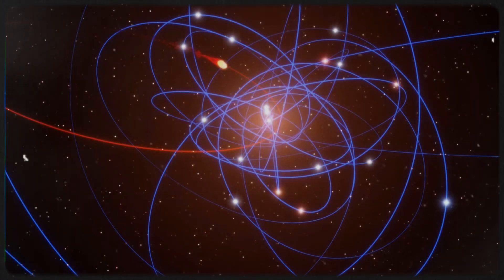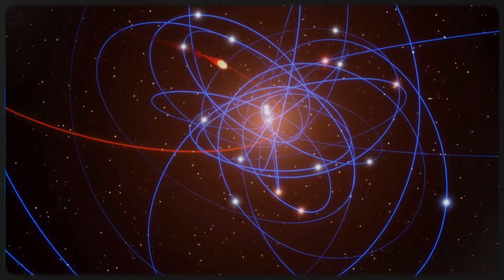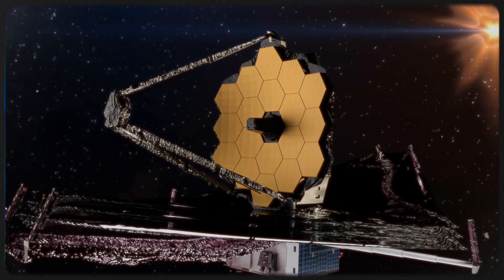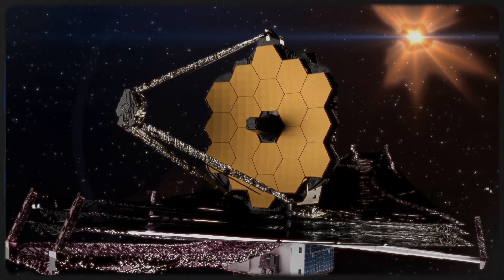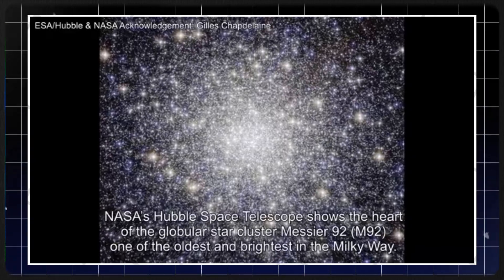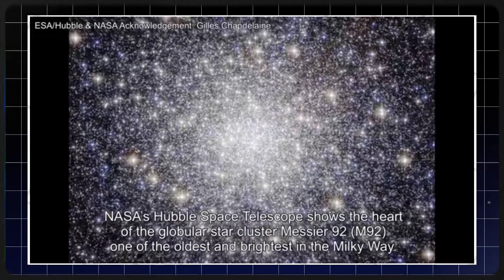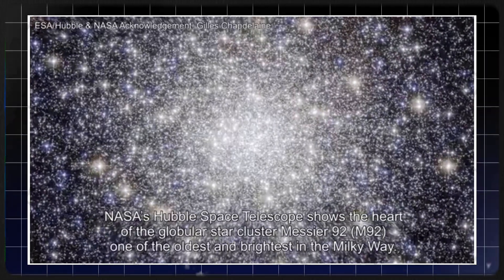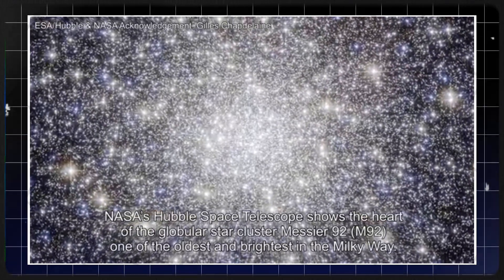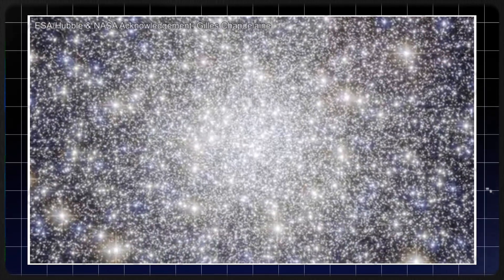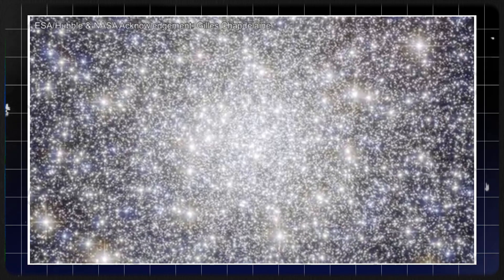Population III stars are theorized to be the universe's earliest stars, forming roughly 13.5 billion years ago. Despite the James Webb Space Telescope's ability to peer back to that era, no direct evidence of these populations has been found. Meanwhile, the globular cluster M92 has been dated at an astounding 13.8 billion years old, suggesting it could be a protogalaxy formed during the universe's infancy. Its age precisely aligns with the current estimate of the universe's age, raising intriguing questions. Could this cluster represent a remnant of the universe's very first structures?